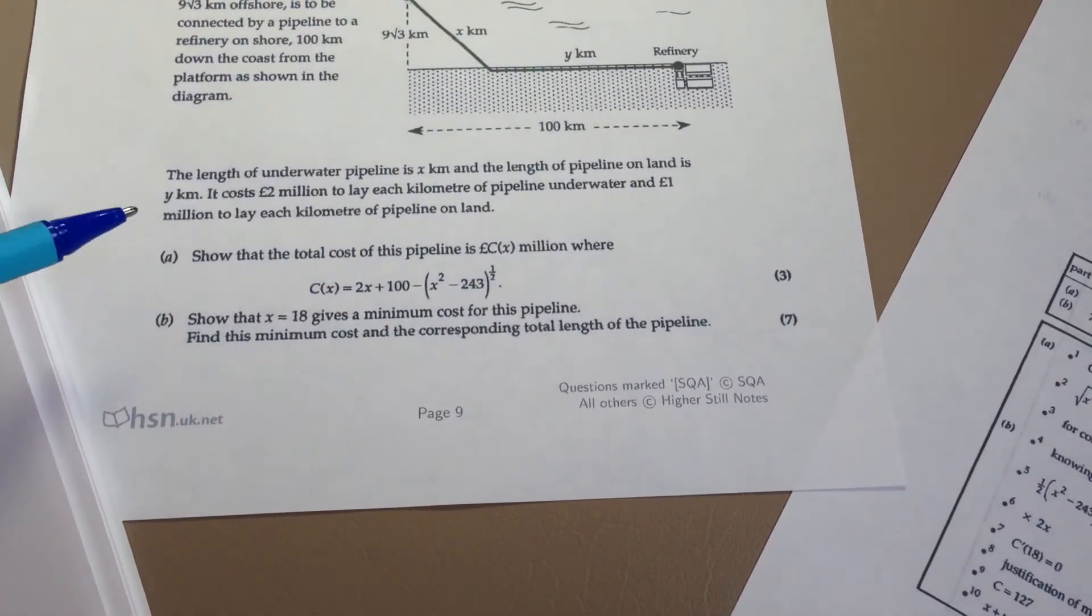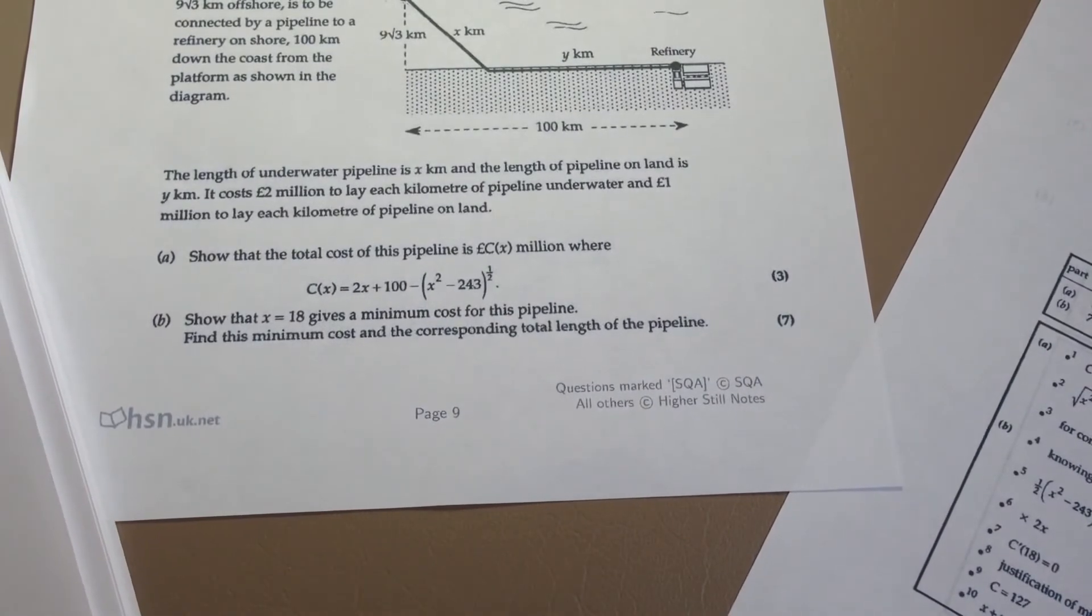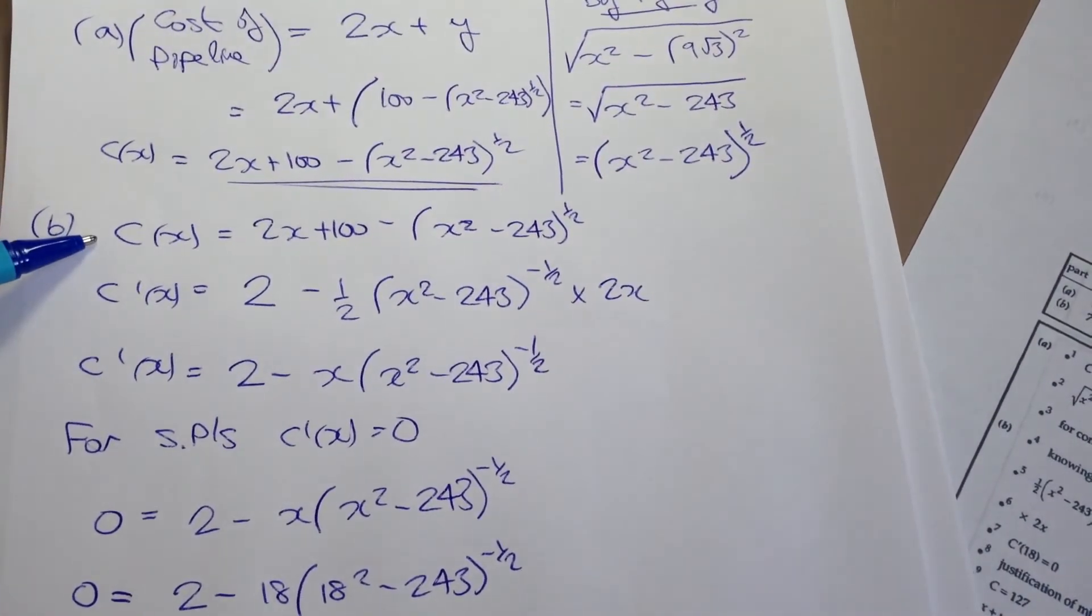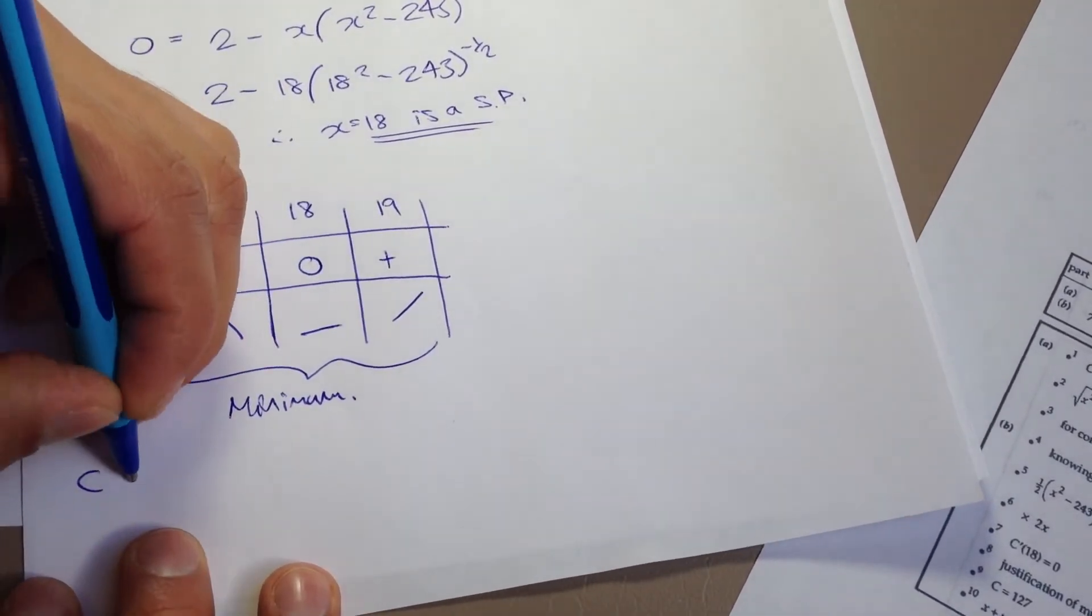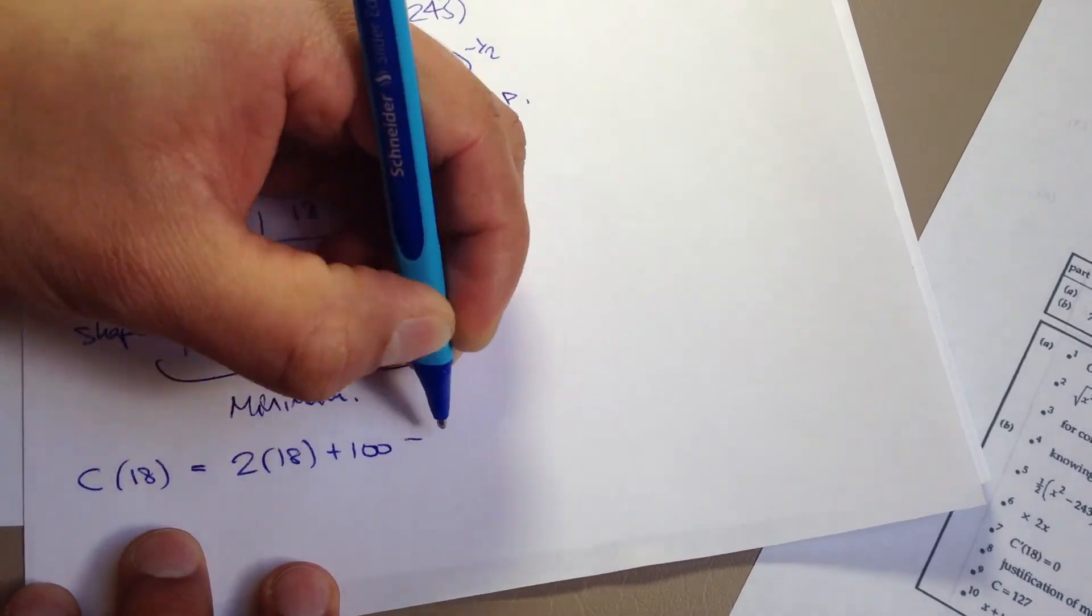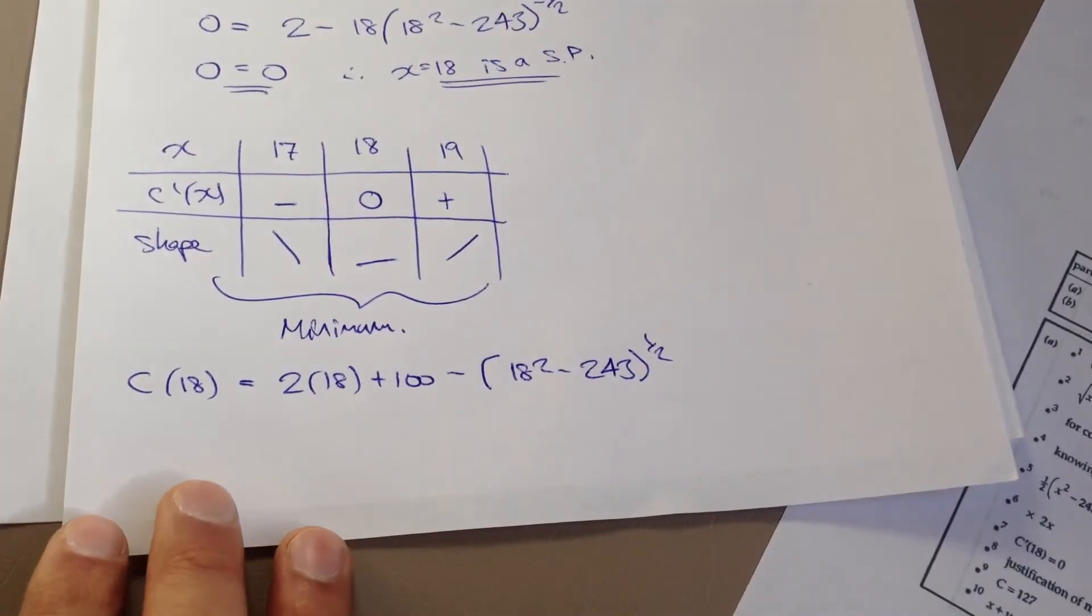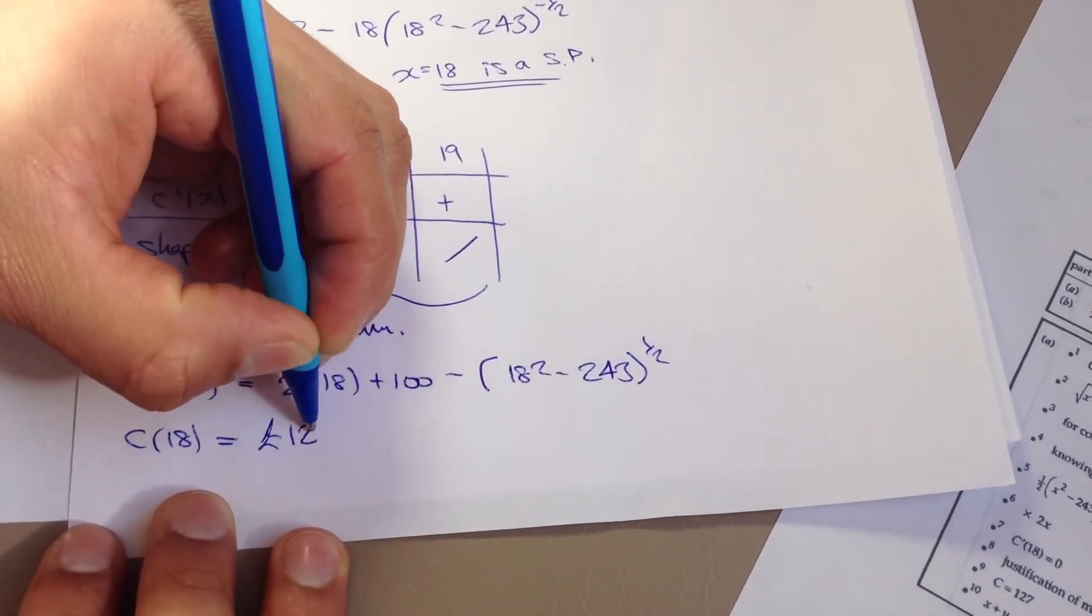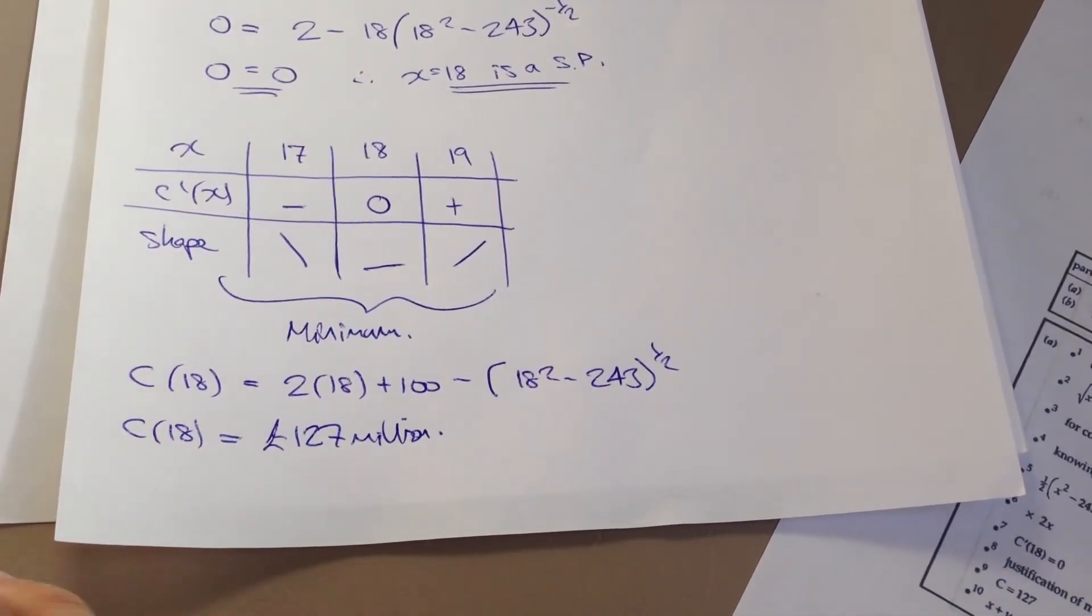They were asking me to show that x equals 18 gives a minimum, and it does. What we then need to do is find this minimum cost and the corresponding total length. So how do we go ahead and do that? We take x equals 18 and we sub it back into our cost equation that we found back here. So C of 18 is going to be 2 times 18 plus 100 minus 18 squared minus 243 to the power of a half. And so you can pop all that into the calculator. And if we do that, lo and behold, the cost when x is 18 works out to be 127 million pounds. Quite a lot of money at the end of the day. So we have a cost.